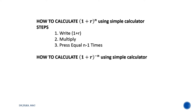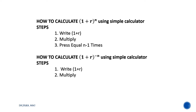Now I will also tell you how to calculate 1 plus r whole to the power minus n using a simple calculator. If we have a calculator of 12 digits, the steps are: write 1 plus r in your calculator, then press multiply only once, then press equal n minus 1 times.